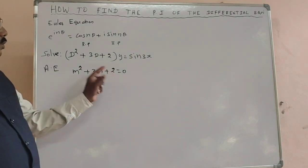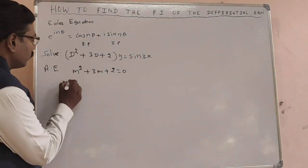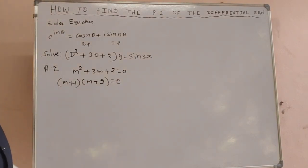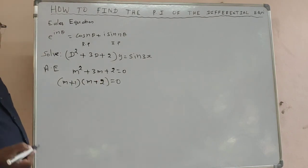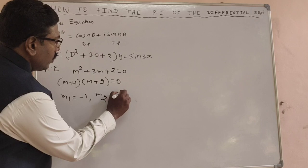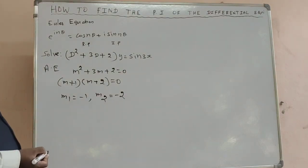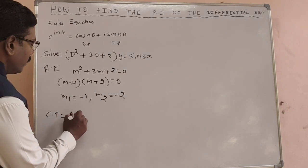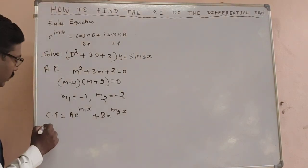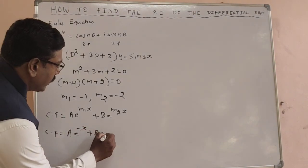Now we have to solve this equation. The product is 2 and the sum is 3, so the numbers are 1 and 2. We can write (m + 1)(m + 2) = 0, giving two roots: m₁ = −1 and m₂ = −2. This can also be solved by using a calculator. So the complementary function CF = A·e^(m₁x) + B·e^(m₂x), that is CF = A·e^(−x) + B·e^(−2x).